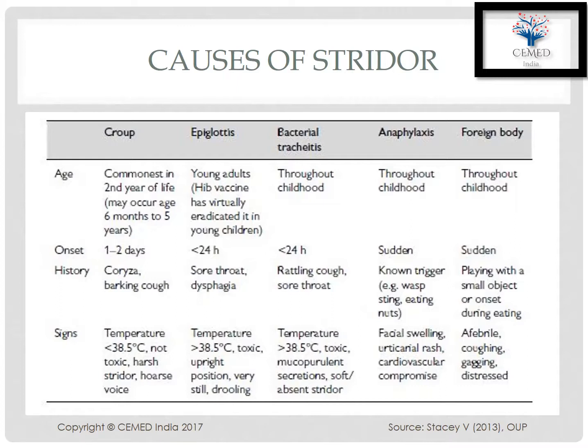A child looking very sick with drooling saliva who had a recent upper respiratory infection or dental infection extending to the pharynx may have a retropharyngeal abscess. Croup, on the contrary, is commonly seen in the age group between six months to six years, with a history of one to three days of cough and coryza symptoms, with the cough classically described as a barking cough.